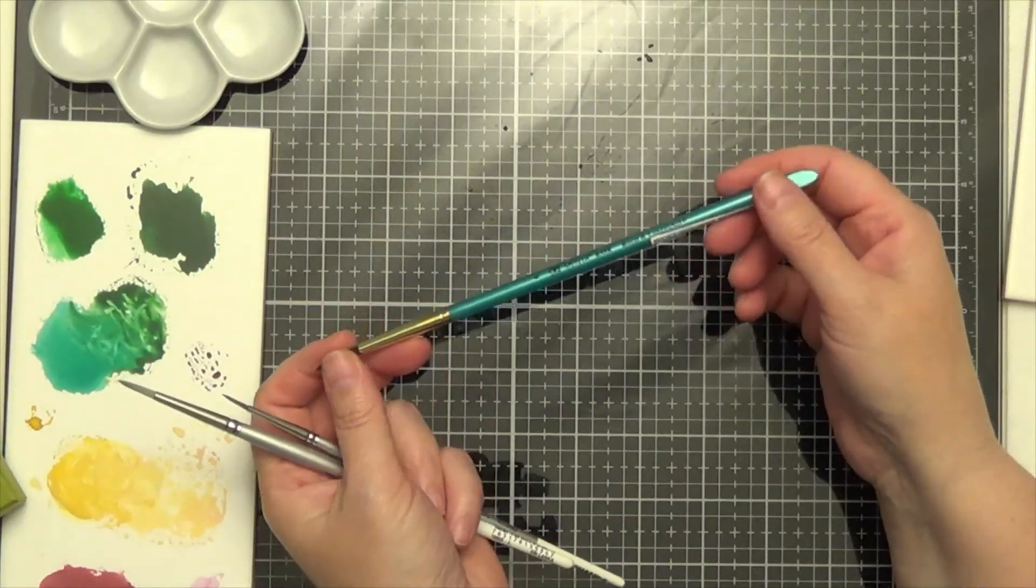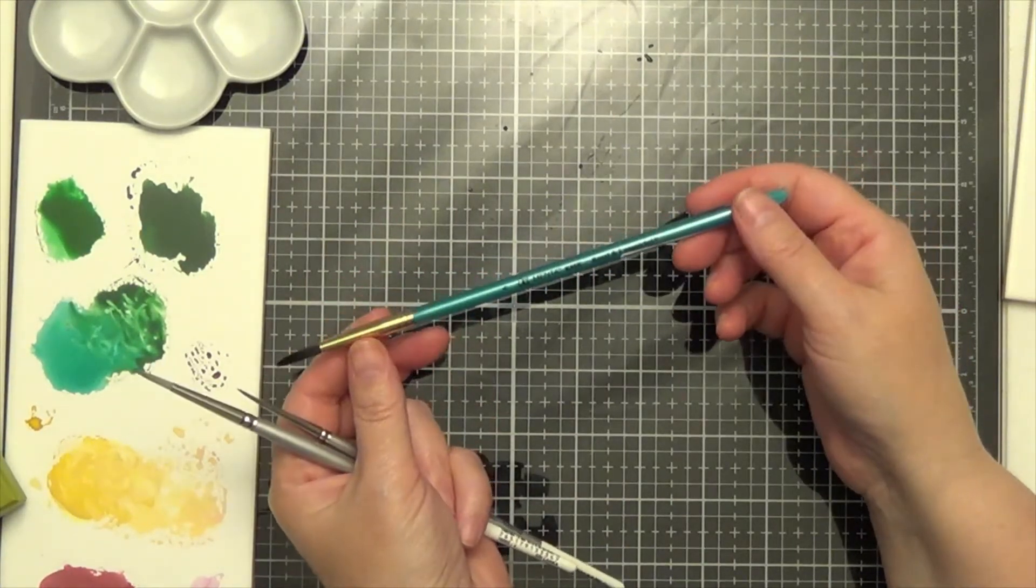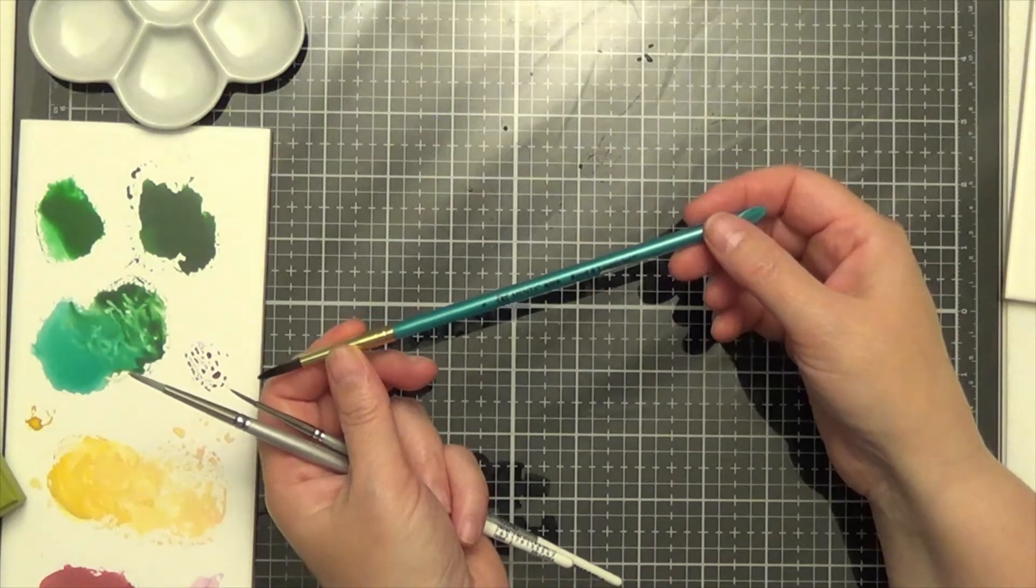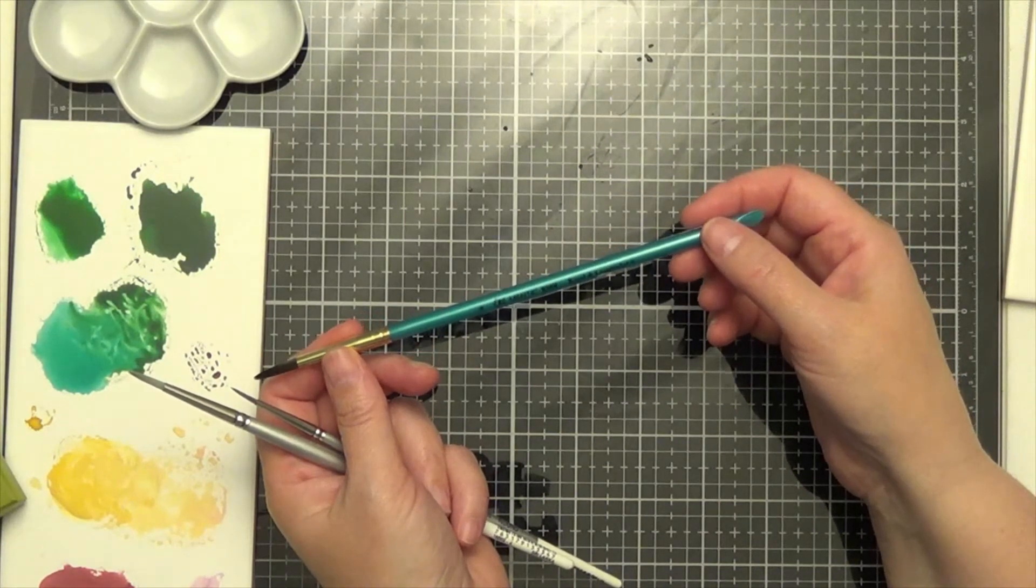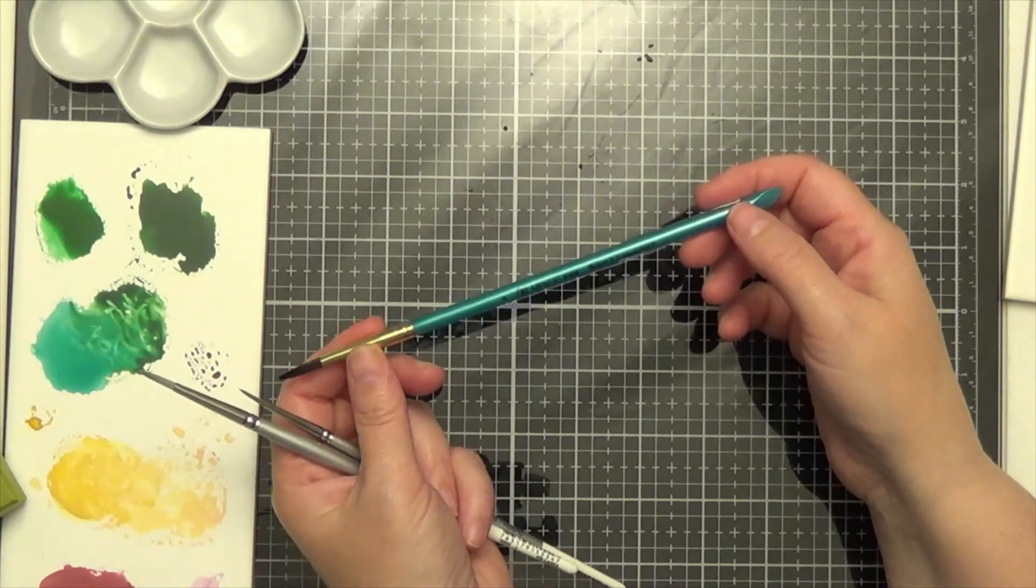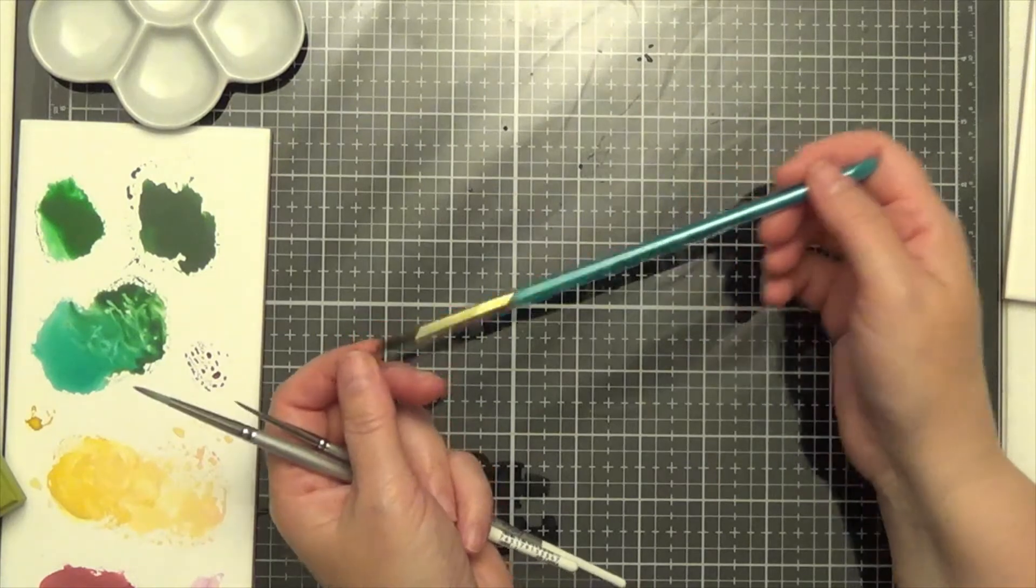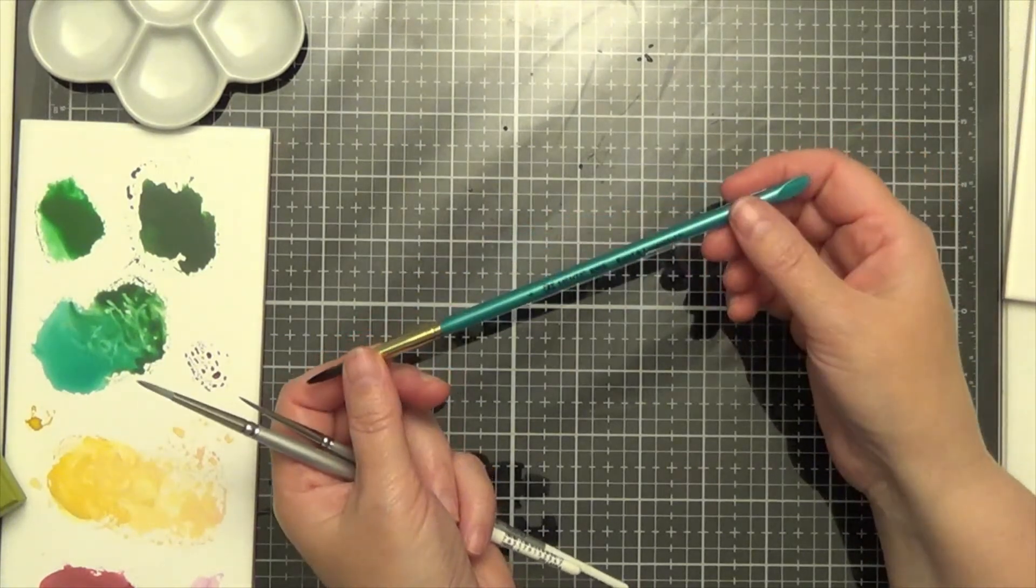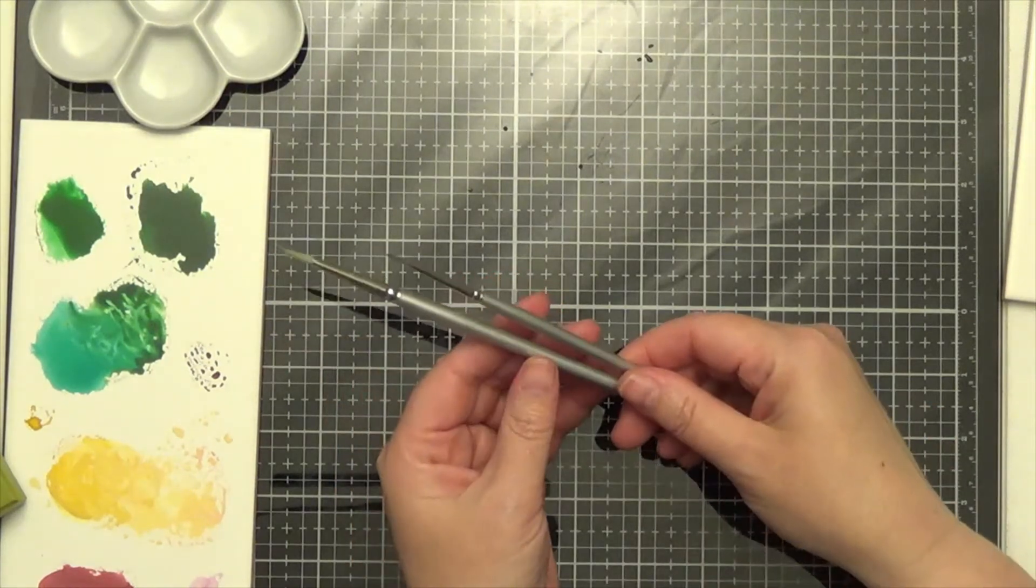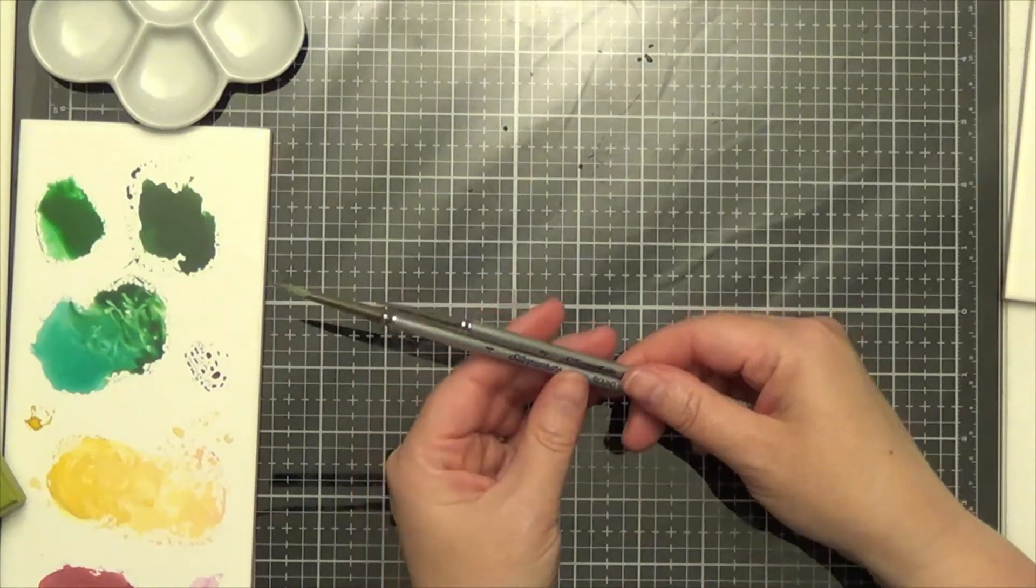This particular brush I think I just picked up at Joann's. I believe it says Royal and something. This is my number six brush. I just picked that up. I really like these two, and these are the only two of these that I have.